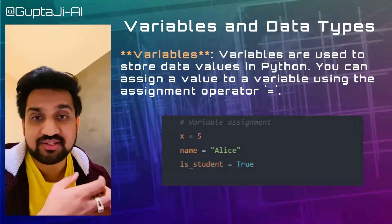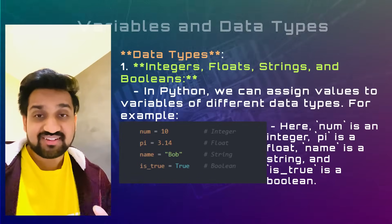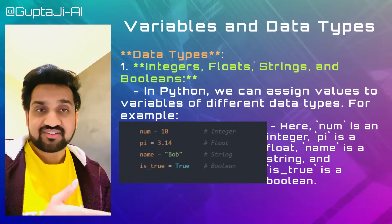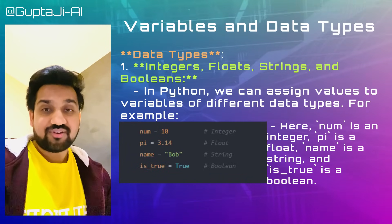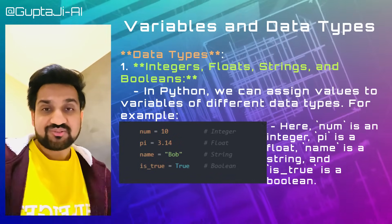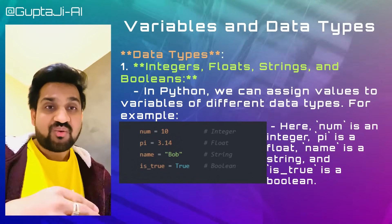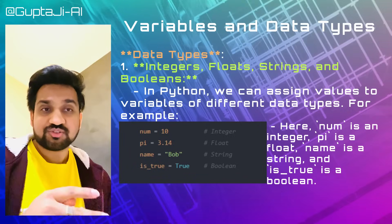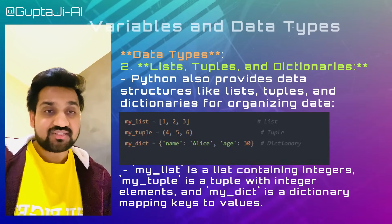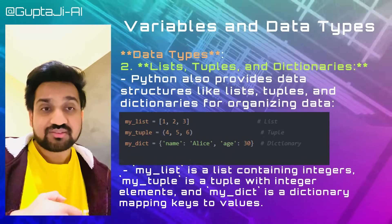Python encompasses a range of data types crucial for programming tasks. For instance, num = 10 signifies an integer, pi = 3.14 denotes a floating point number, name = 'bob' assigns a string, and is_true = True sets a boolean. Data structures like lists, tuples, and dictionaries provide organized mechanisms for storing collections of data elements.